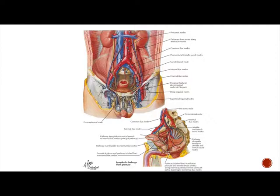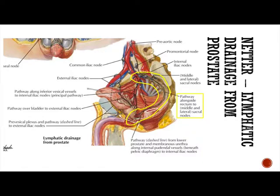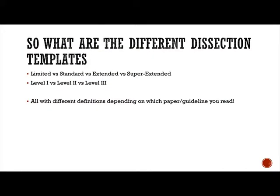Looking at Netter's, the principal pathway goes along the inferior bladder vessels to the internal iliac nodes. Other pathways come from the periprostatic plexus to the external iliac nodes, and also ones that run alongside the rectum to the middle and lateral sacral nodes — should we be including those in our template? There are also channels from the prostate and membranous urethra to the internal iliac nodes. The anatomy textbooks say different things, no wonder there is wide variation in the different templates discussed.